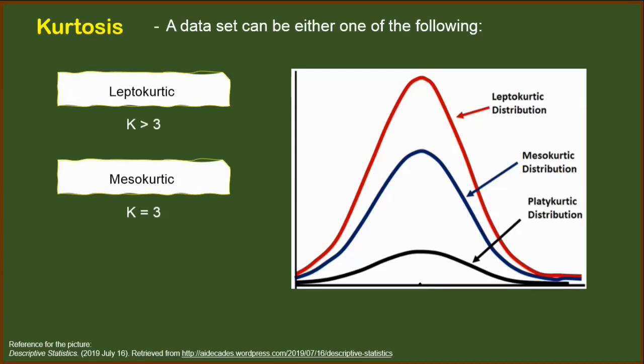And its kurtosis is greater than 3. However, we also have this flat distribution. It is called the platykurtic and its kurtosis is less than 3. So the boundary here is 3. If it is equal to 3, if the kurtosis is equal to 3, then that is mesokurtic.